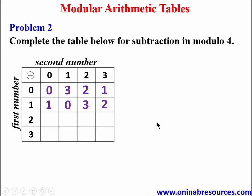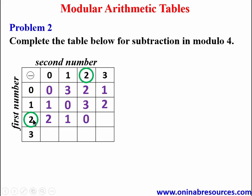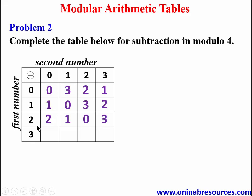We now go to the row of 2. Our first number is 2: 2 minus 0 gives 2, 2 minus 1 gives 1, 2 minus 2 gives 0. Finally, 2 minus 3 is negative 1; adding 4 gives 3. Therefore 2 minus 3 gives 3 in modulo 4, and we are done with that row.